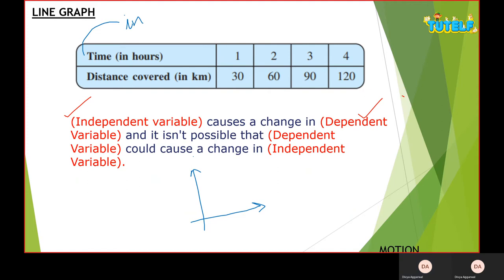It is not possible that distance could cause a change in time. Is it correct? Yes, because nothing can cause a change in time, so my independent variable here would be time. We write time on the x-axis because time is constant and continuously moves and depends on nothing.